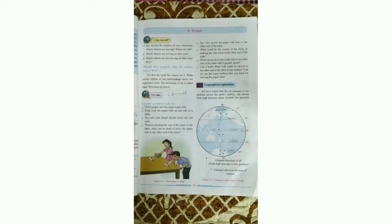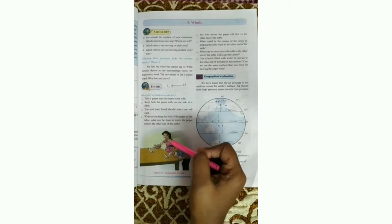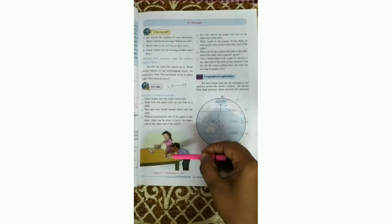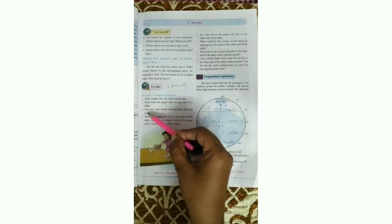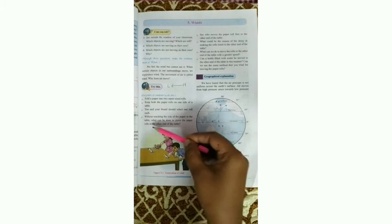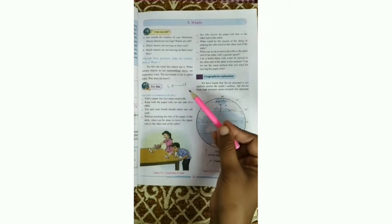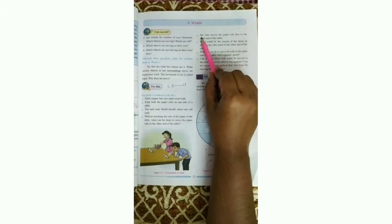Let's try this activity. Fold a paper into two same-sized rolls. Keep both paper rolls on one side of the table. You and your friend should each select one roll. Without touching the rolls, what can be done to move them to the other end of the table? Yes — if we blow air, the roll will be pushed across the table. See who moves their paper roll to the other end first.